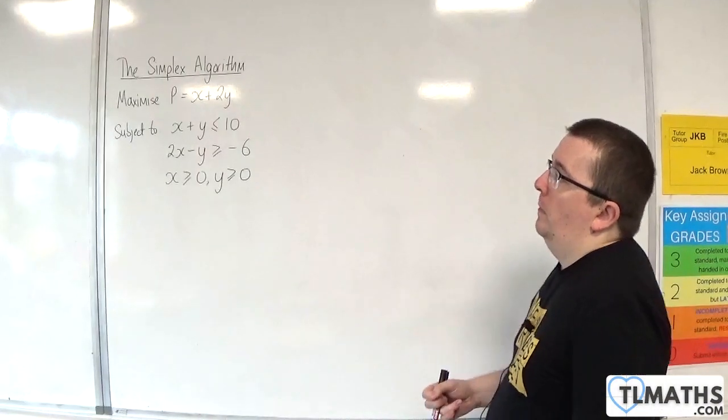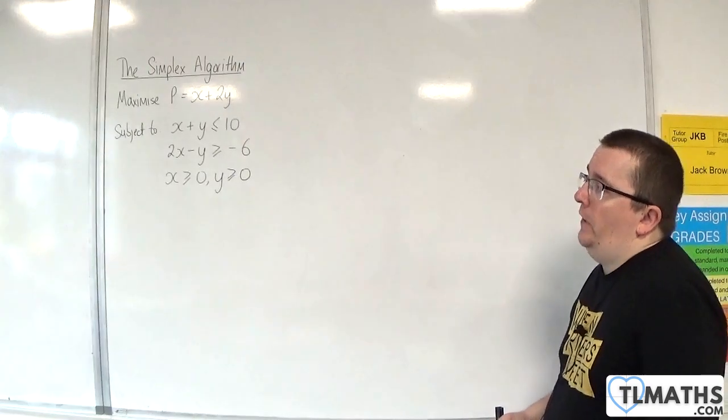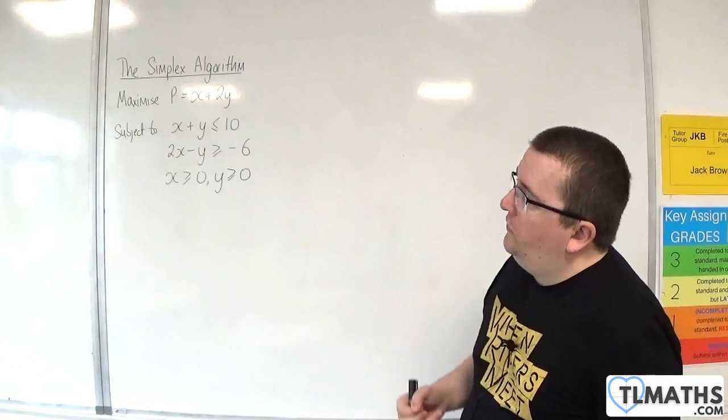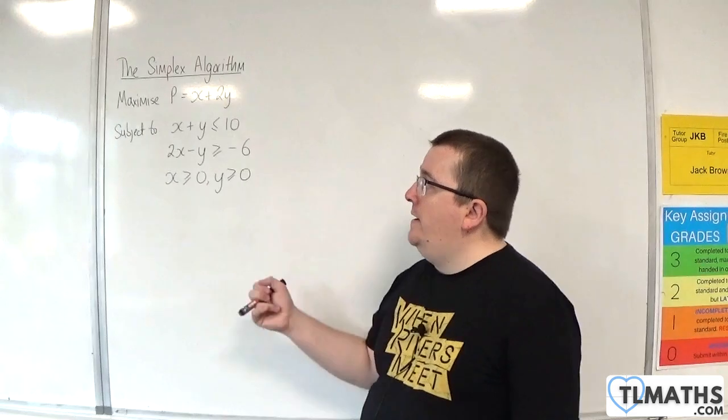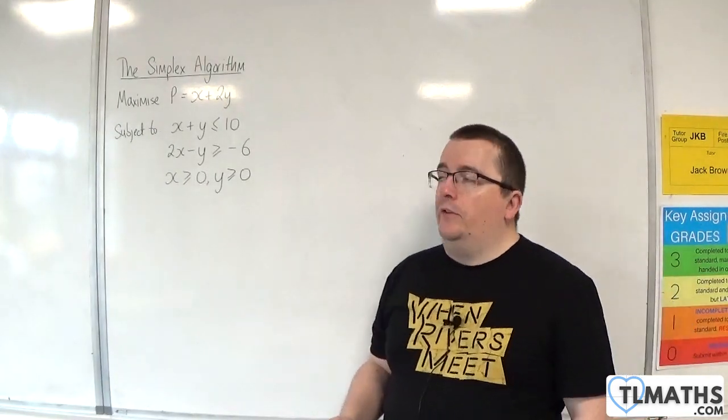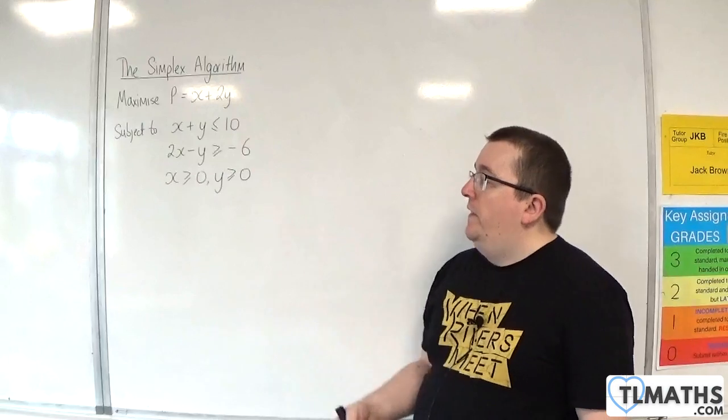In this video, we're going to take a look at this problem. We're going to maximize p equals x plus 2y, subject to x plus y is less than or equal to 10, and 2x take away y is greater than or equal to minus 6, where x and y are greater than or equal to 0.